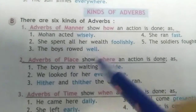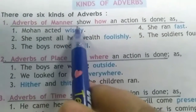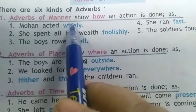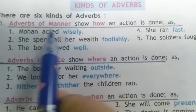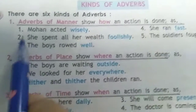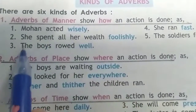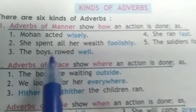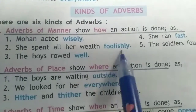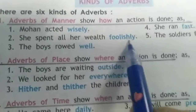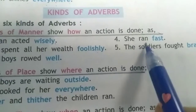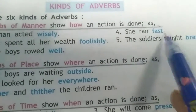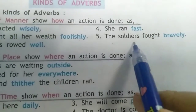First, adverb of manner. Adverb of manner tells how something is done or happens. We use it at the beginning or end of a sentence — it tells how the action is done. For example: 'Mohan acted wisely.' 'She spent all her wealth foolishly' — how did she spend? Foolishly. So 'foolishly' is an adverb of manner. 'The boy's role well' — 'well' is adverb of manner. 'She ran fast' — fast is adverb of manner. 'The soldiers fought bravely' — bravely is adverb of manner.